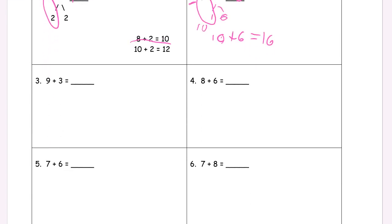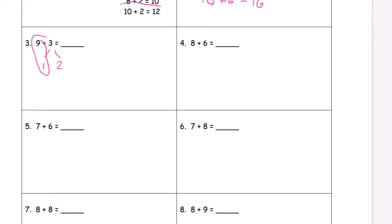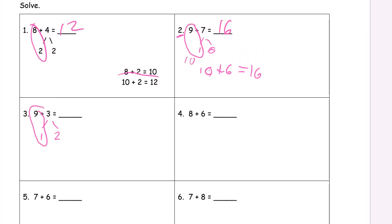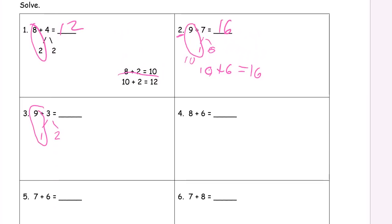Number 3. 9 plus 3 equals... And 9 needs a 1. So let's make a 1 and 3. We'll need a 2 and a 1 to make 3. So there's the 10 we needed. And we have 10 and 2. 10 plus 2 equals 12.